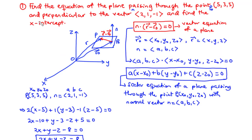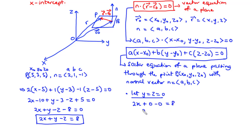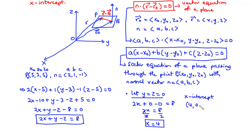The next thing is to find the x-intercept. To find the x-intercept, we let y and z be equal to 0. From this equation, we have 2x plus 0 minus 0 equals 8. This becomes 2x equals 8. We divide through by 2, and we have x equal to 4. Therefore, the x-intercept is (4, 0, 0).